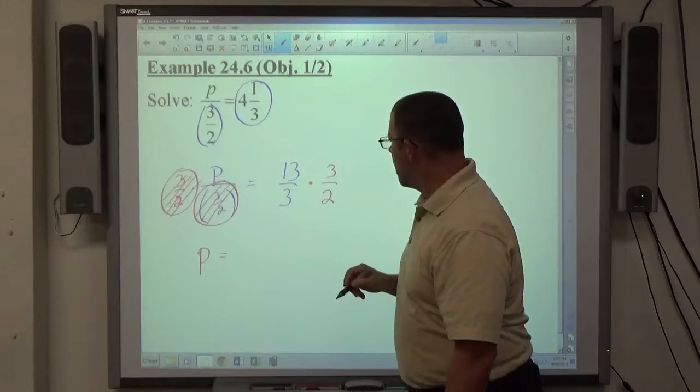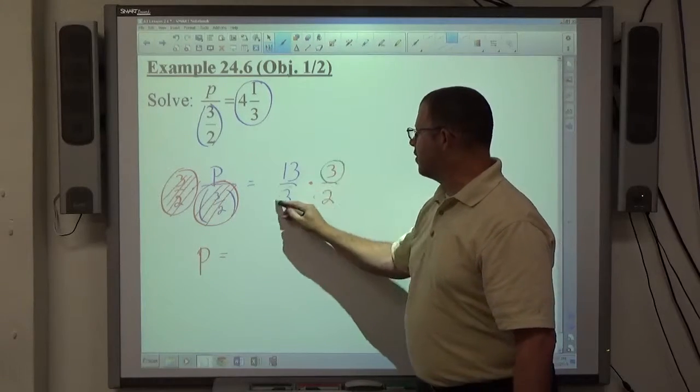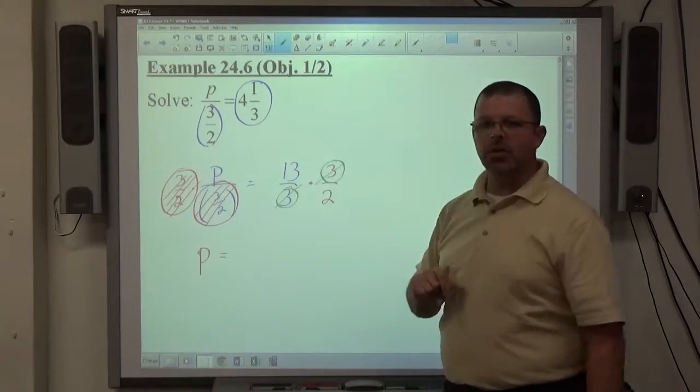So we get 1p equals, over on this side, since this is a 3 on top and this is a 3 on the bottom, we can again reduce before multiplication.